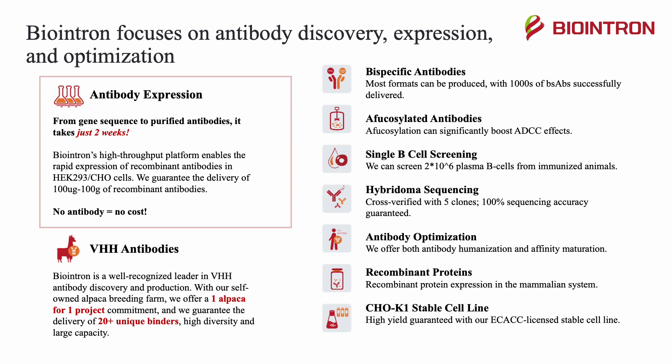BioWintron focuses on antibody discovery, expression, and optimization. Our main feature is antibody expression with gene sequence to purified antibodies in just two weeks. BioWintron's high throughput platform enables the rapid expression of recombinant antibodies in HEK or CHO cells. We guarantee the delivery of 100 micrograms to 100 grams of recombinant antibodies, and no antibody means no cost. We also have a VHH antibody library generation service, in which BioWintron is a well-recognized leader in the space. With our self-owned alpaca breeding farm, we offer a one alpaca for one project commitment and guarantee the delivery of over 20 unique binders, high diversity, and large capacity.